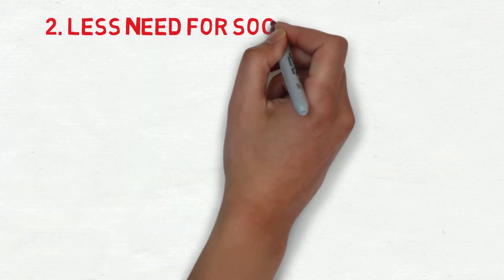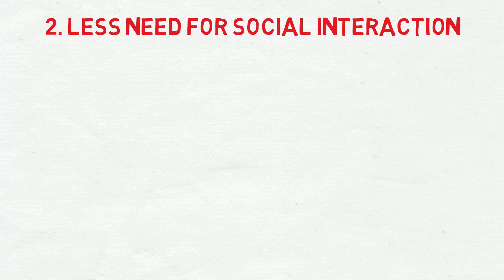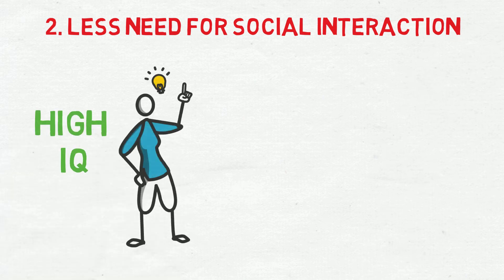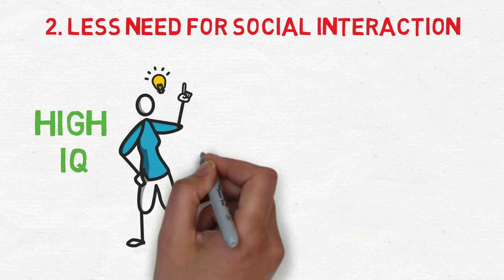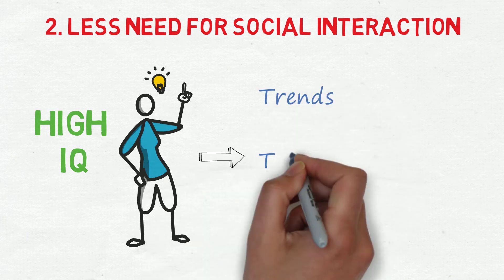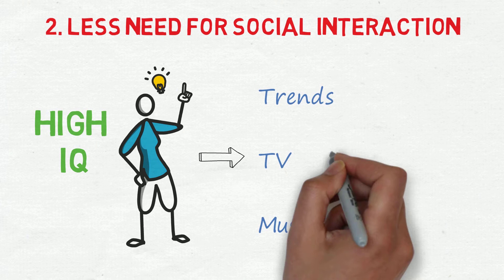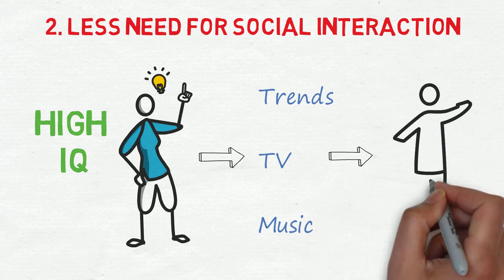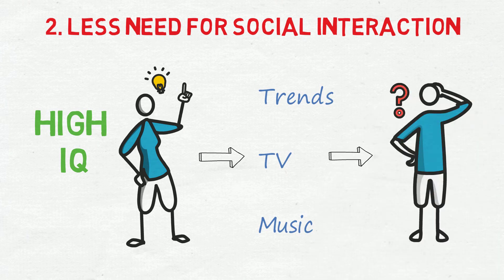Number two, the need for social interaction is less. In many cases, the higher IQ that you have, the more socially awkward you are. Many geniuses struggle to talk about the latest trends, TV shows, or even music. They are busy thinking about large, complex problems that actually interest them.